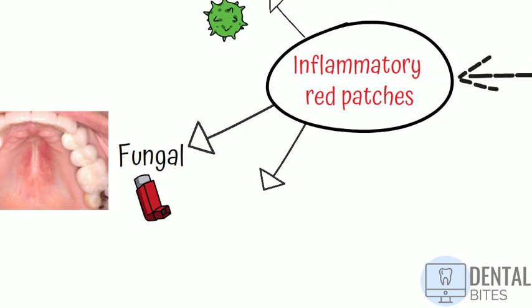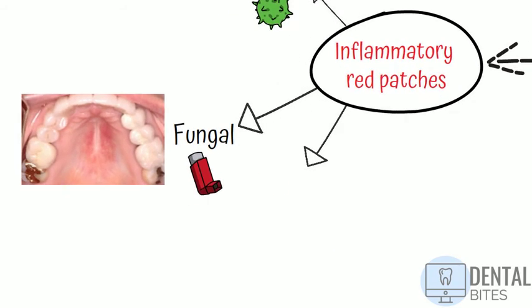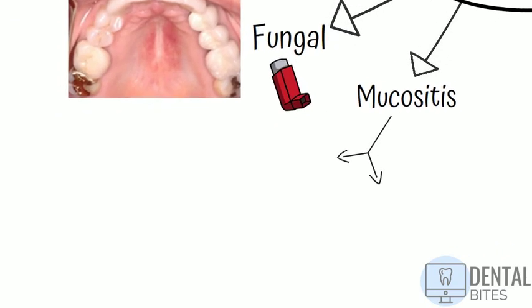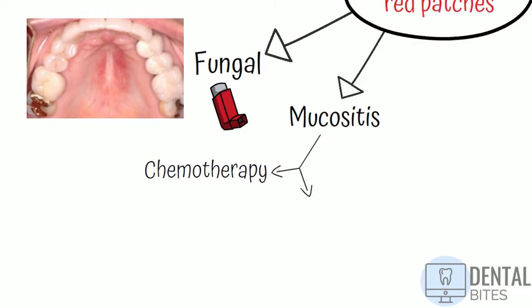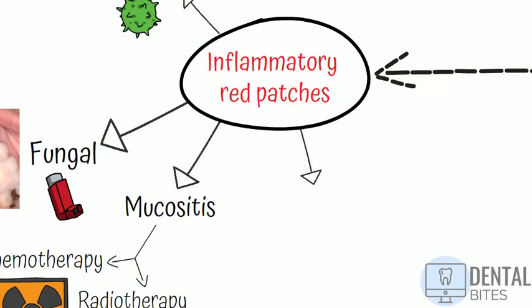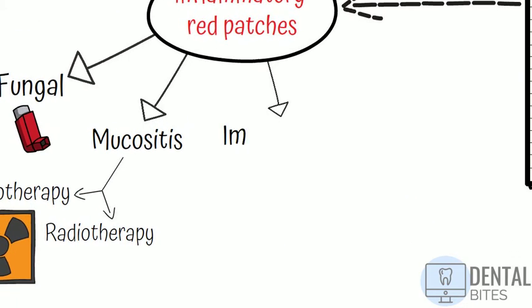Another cause for inflammatory red patches is mucositis. Like stomatitis, mucositis also means inflammation of the mucous membranes, but we tend to use this term when the lesions are caused by anti-cancer agents like chemotherapy or radiotherapy, whereas stomatitis is typically used to describe non-cancer related oral conditions, especially viral infections like the ones we mentioned.